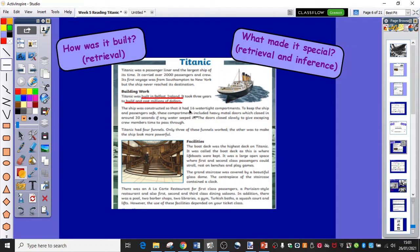The ship was constructed so it had 16 watertight compartments to keep the ship and passengers safe. These compartments included, now this is all getting into really important information about how the ship was made. It included heavy metal doors which closed in around 30 seconds if any water seeped in. The doors closed slowly to give escaping crew members time to pass through. This is all important information, especially when we come to discuss what happened to the Titanic later on in the week.